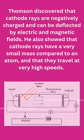Thomson discovered that cathode rays are negatively charged and can be deflected by electric and magnetic fields. He also showed that cathode rays have a very small mass compared to an atom, and that they travel at very high speeds.